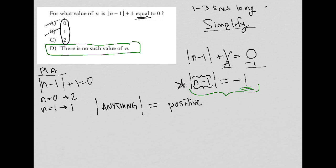And then lastly, if n were to equal two, we would get a value of two. So also not zero. So that would also lead you to believe that there is no such value of n.